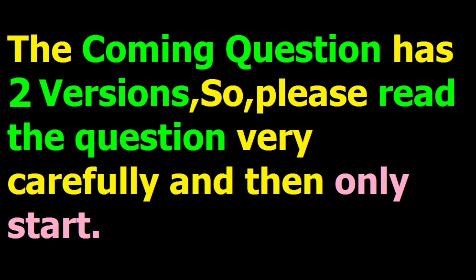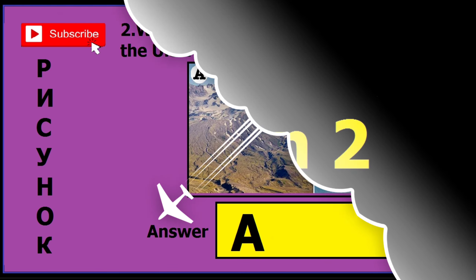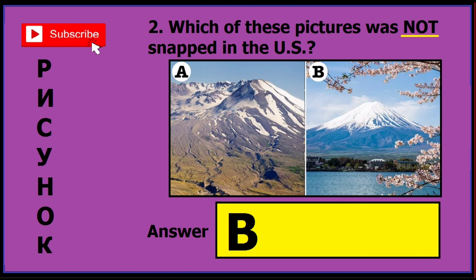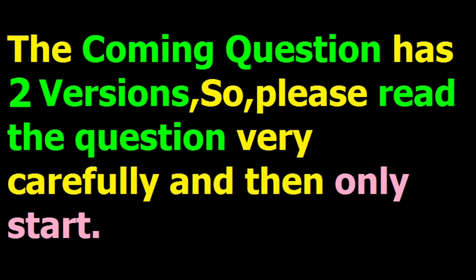The next question also has two versions, so please read the question very carefully. In version one, the question is 'which of these pictures was snapped in the US?' and the correct answer is A. In version two, the question is 'which of these pictures was not snapped in the US?' and the correct answer is B.